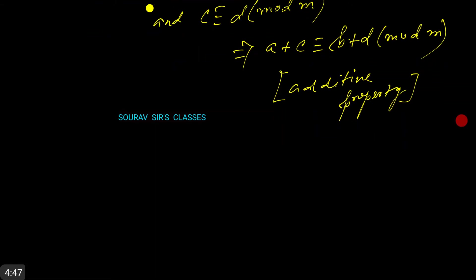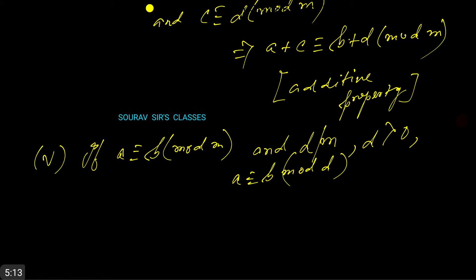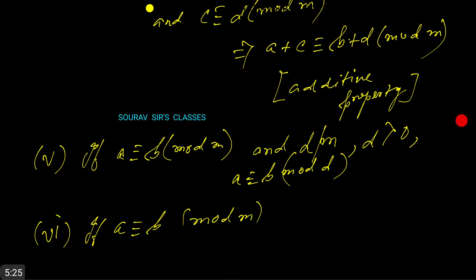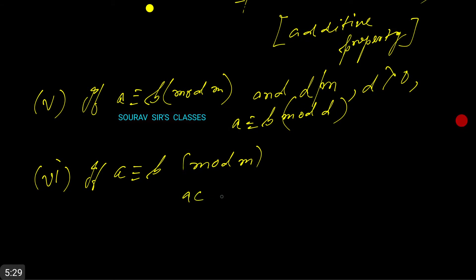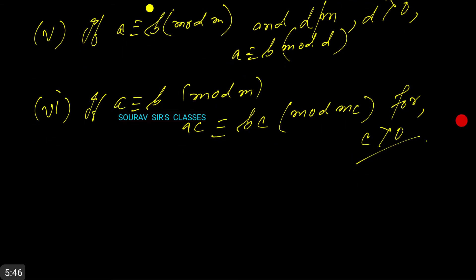Number 5: if a ≡ b (mod m) and d divides m with d greater than 0, then a ≡ b (mod d). Number 6: if a ≡ b (mod m), then ac ≡ bc (mod mc) for c greater than 0. These are a few properties.